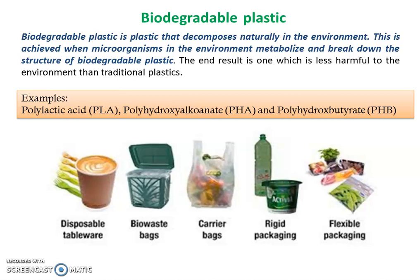Basically, there are three different types of bioplastics. First one is starch-based bioplastics. Second one is cellulose-based bioplastics. And third one is aliphatic polyester bioplastics. Examples of aliphatic polyester bioplastics are polylactic acid, polyhydroxyalkanoate and polyhydroxybutyrate.